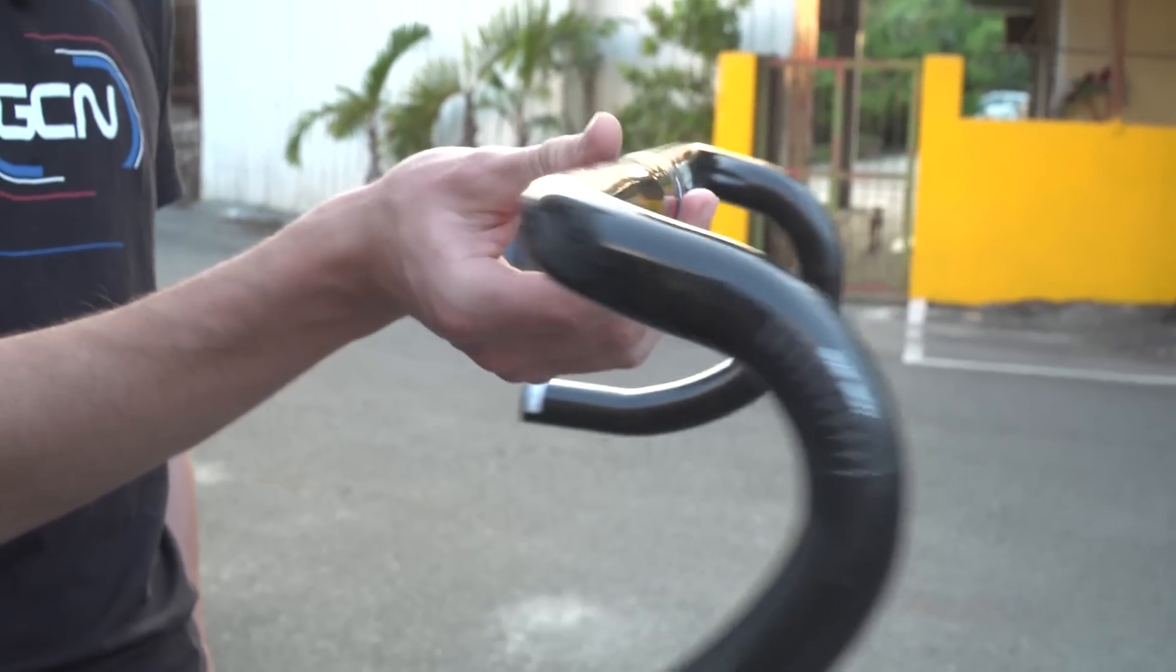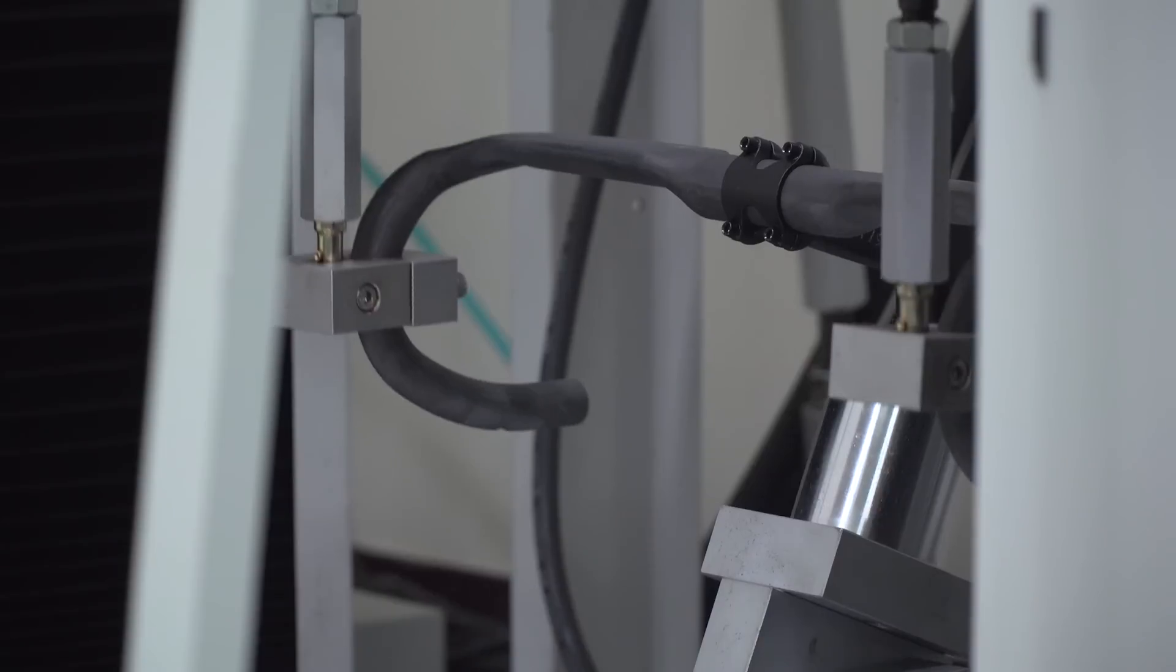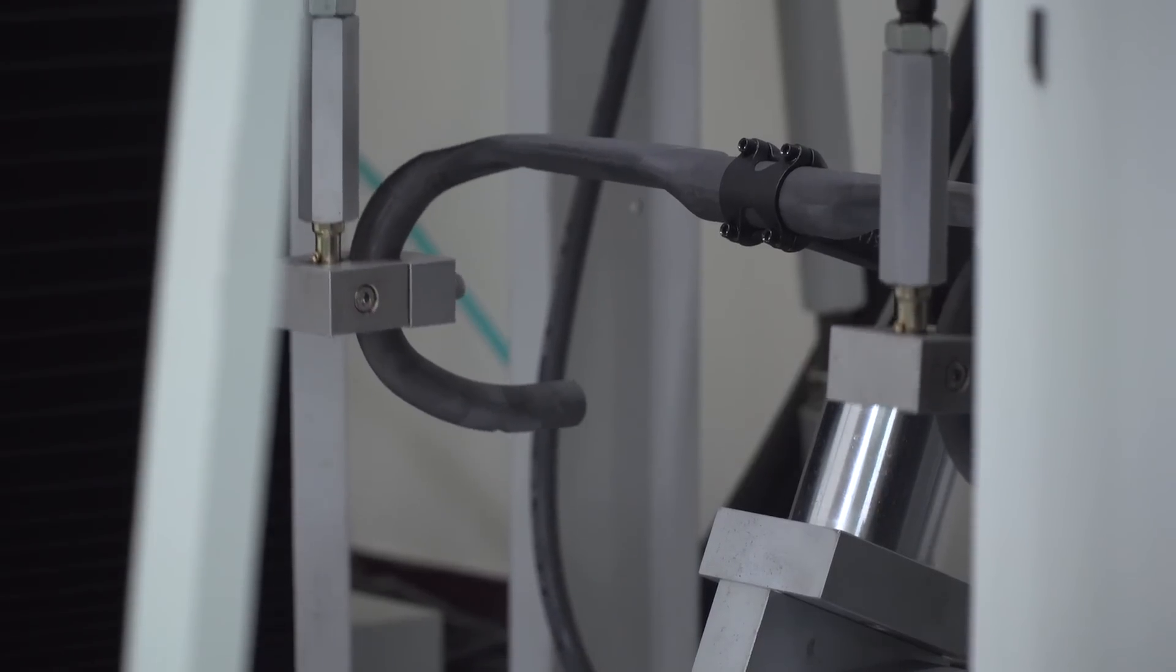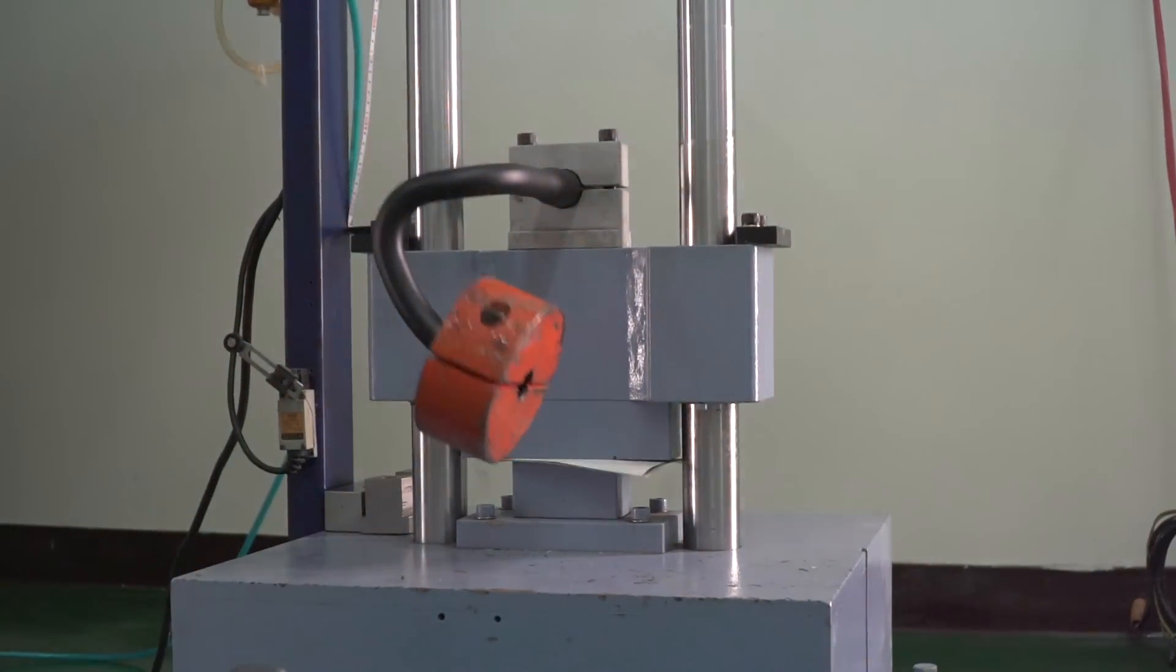So, we have an answer. The carbon handlebar is stronger, most of the time. Sometimes, however, the aluminium handlebar is stronger. I do think it's interesting that carbon has clearly a greater resistance to fatigue, whereas aluminium clearly has greater resistance to impact.